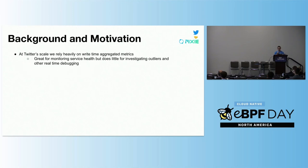Moving on to the background. At Twitter's scale, we rely heavily on real-time aggregated metrics. This is great for monitoring service health, but it really limits your ability to slice and dice your data. And so when you're investigating outliers or doing other real-time debugging, it becomes a real challenge.